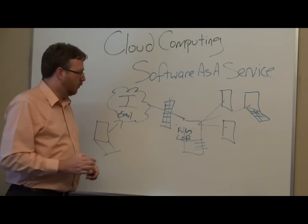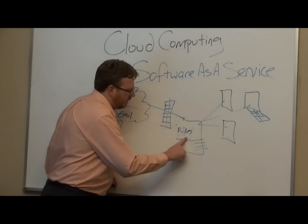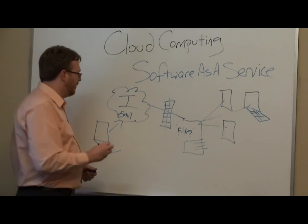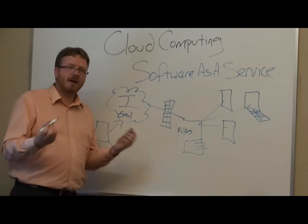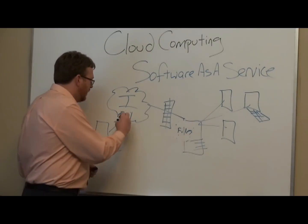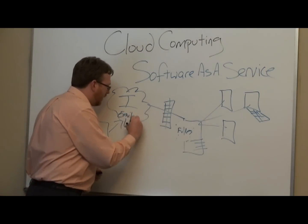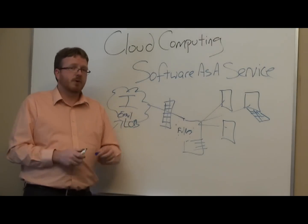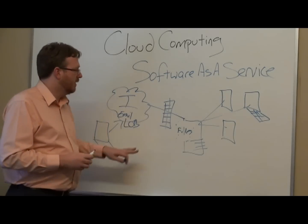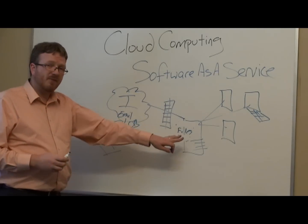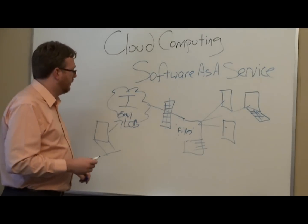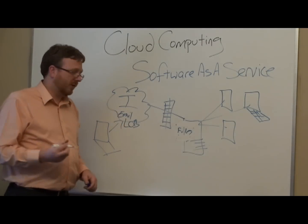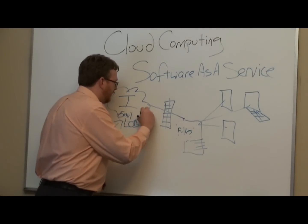Well, that's step one. Step two is: the line of business application — maybe we're going to replace that with something like Microsoft Online CRM, and we're going to use that to control all of our customer data and put all that stuff out on the internet. Now we've got files out there, and the files are feeling pretty lonely, so we can move the files out there too. We could use something like SharePoint Online and move our files out to the internet.